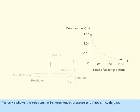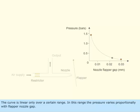The curve shows the relationship between outlet pressure and flapper nozzle gap. The curve is linear only over a certain range. In this range, the pressure varies proportionally with flapper nozzle gap.